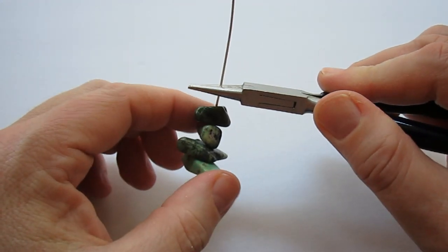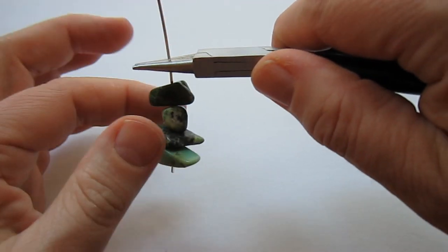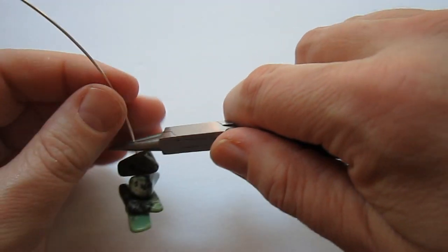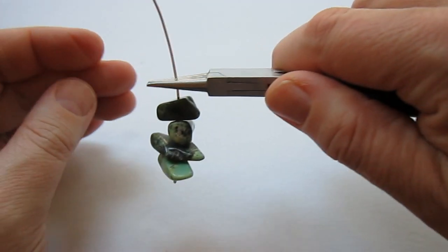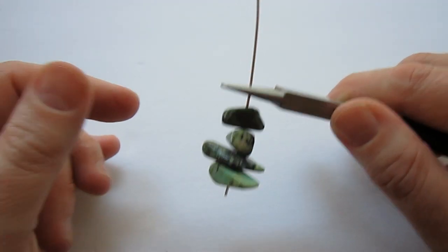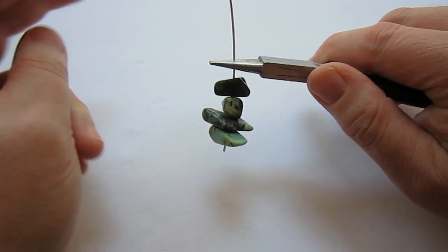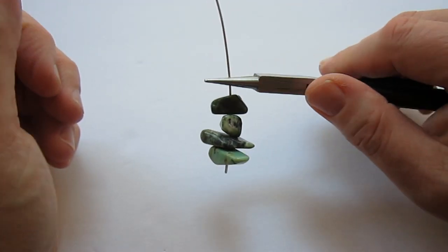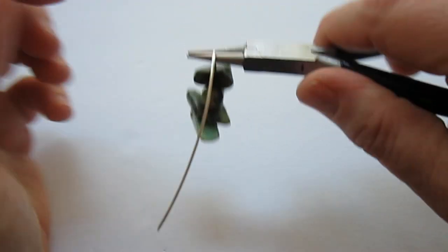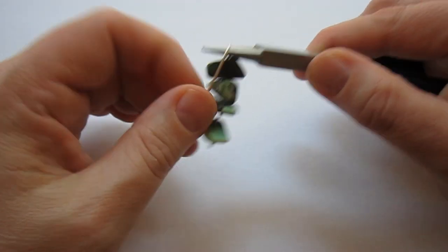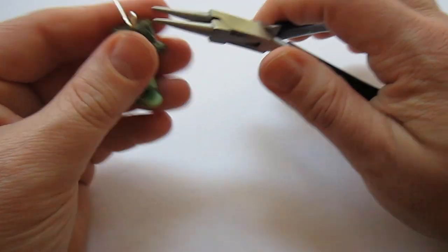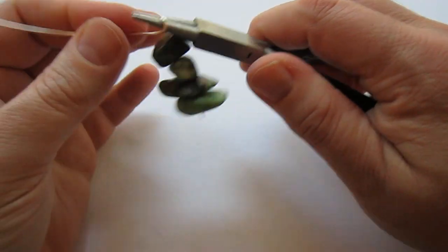So I'm using my round nose pliers. I'm holding the wire about a quarter of an inch above the beads. Actually it's a little more than that in this case. When the wire is a little thicker you might want to give it a little more space. So usually with 20 gauge I'll do a quarter of an inch. I wouldn't say this is a half of an inch but it's a little bit more than a quarter. Then you're just going to pull the wire down and around. So we're going around one barrel of our round nose pliers.